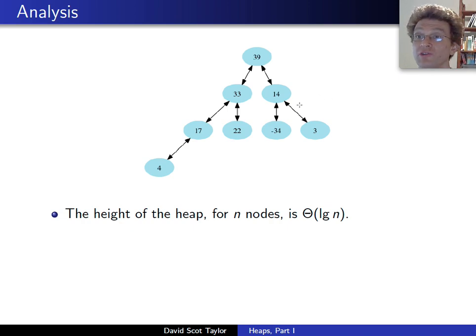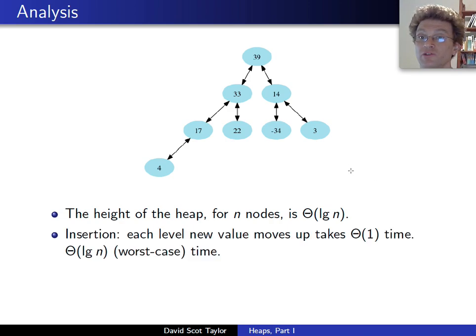So look, because this is a perfectly balanced binary tree, the height of the heap for n nodes is Θ(lg n). When you want to insert, you insert at the bottom, and it moves up to at most the top of the tree. And for each level that it moves up, you just compare against the parent and then swap if you need to. So that's worst case time O(lg n) for insertion.